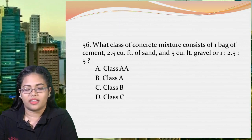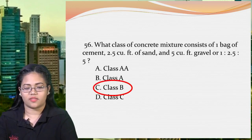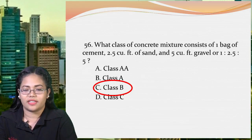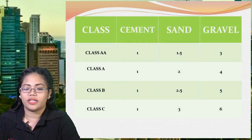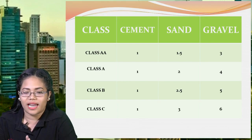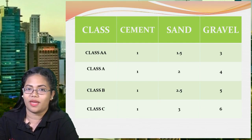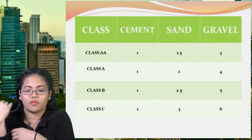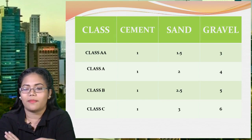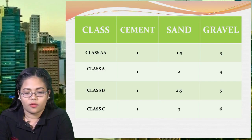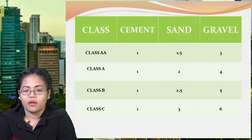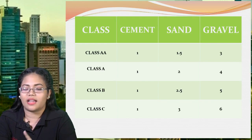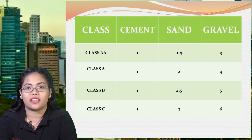The correct answer here is letter C, class B. To understand why, let's look at this table showing the ratio of concrete mixture for different classes. All classes have the same amount of cement — 1 bag. What you need to remember is the amount of gravel per class. Gravel starts at 3 and ends at 6: class AA has 3 cubic feet gravel and 1.5 sand; and it goes up to class C with 6 cubic feet gravel. To get the sand, just divide the gravel by 2.